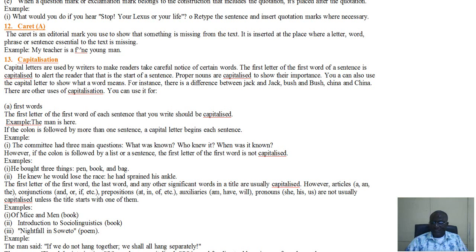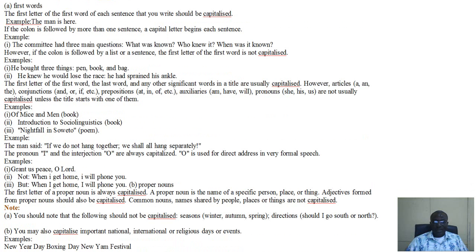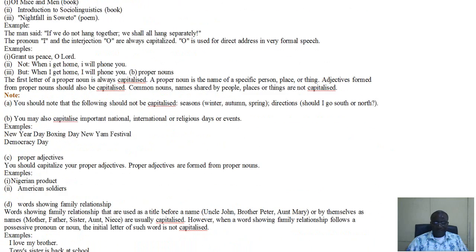Then you have capitalization. Capitalization, by the way, is also a punctuation mark. Capital letters are used by writers to make readers take careful notice of certain words. The first word in English is that the proper noun, the initial letter of the proper noun, has to be capitalized. So example: Musa. In the name Musa, you have a capital M. And then wherever you find capitalization, what it means is that it is either emphasis or contrast.